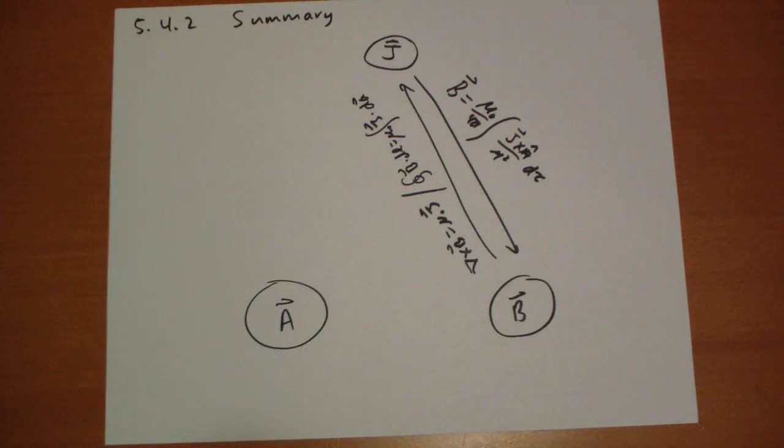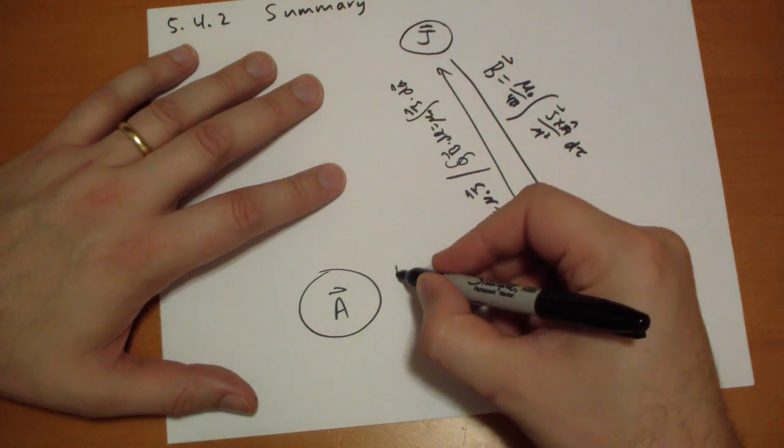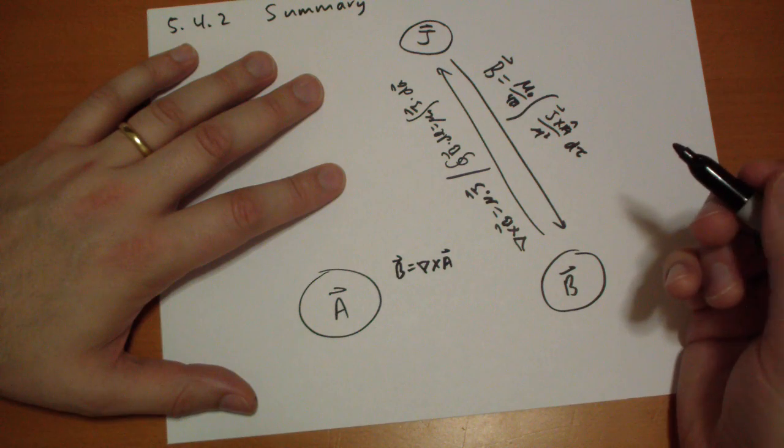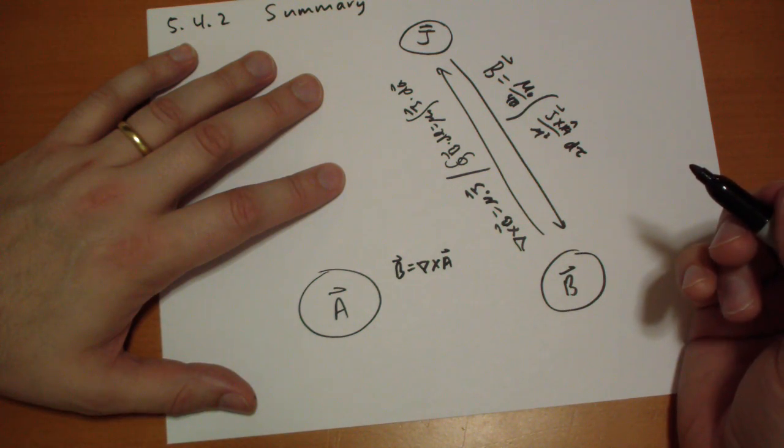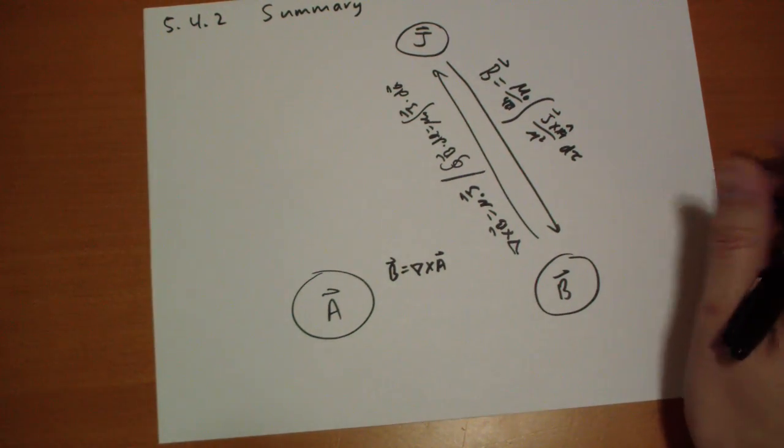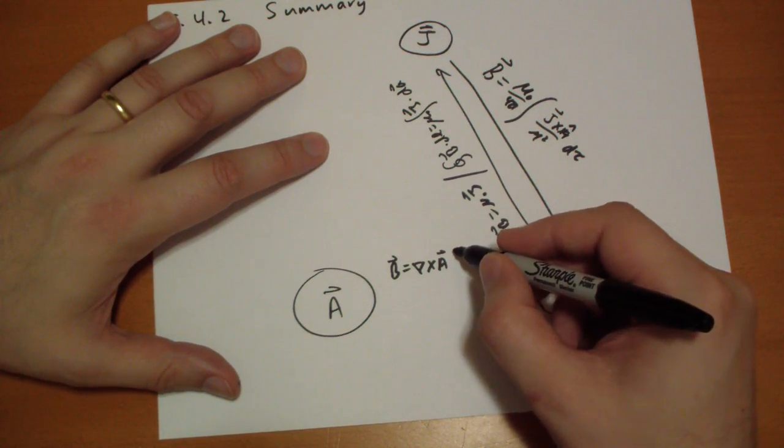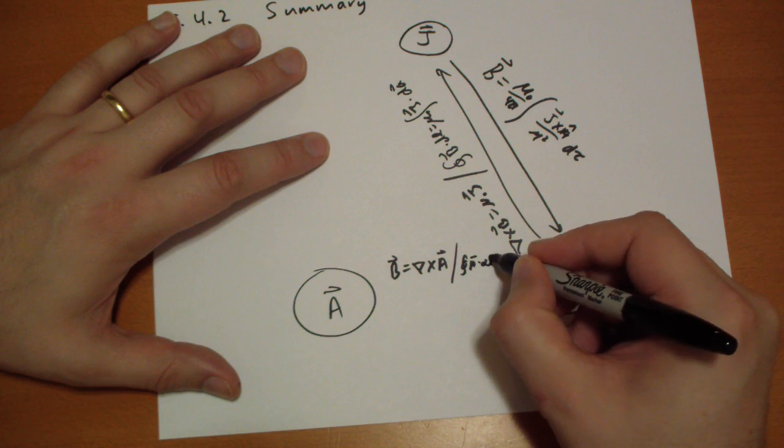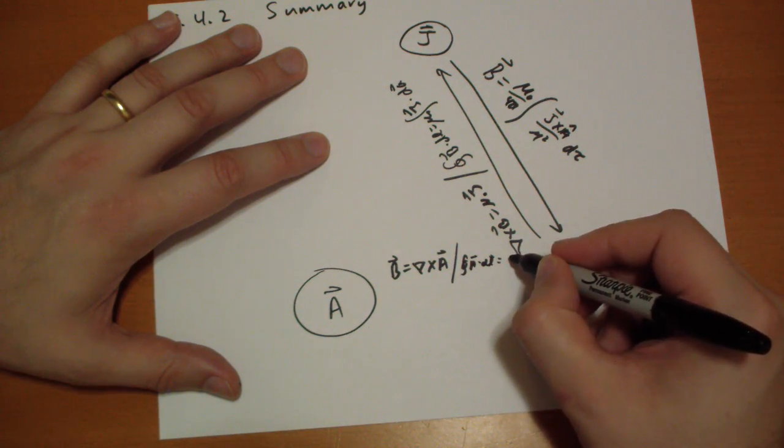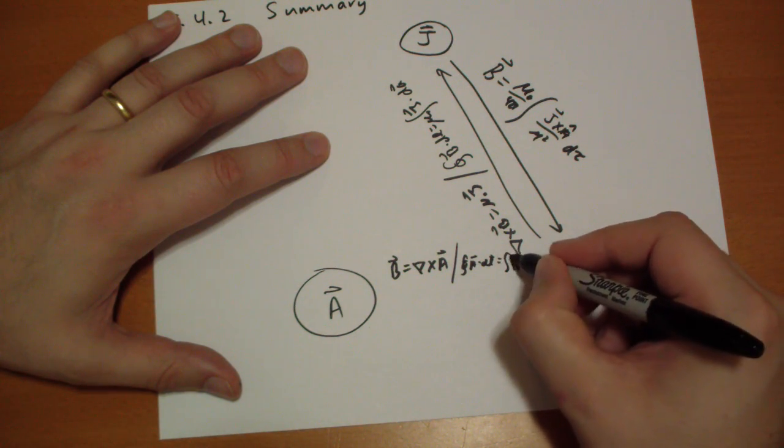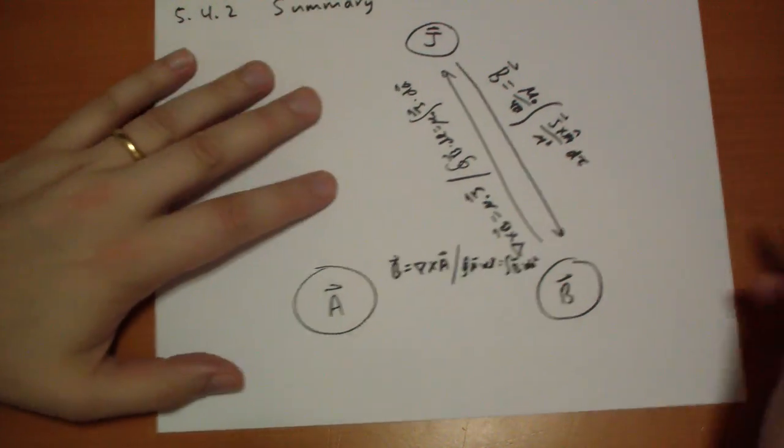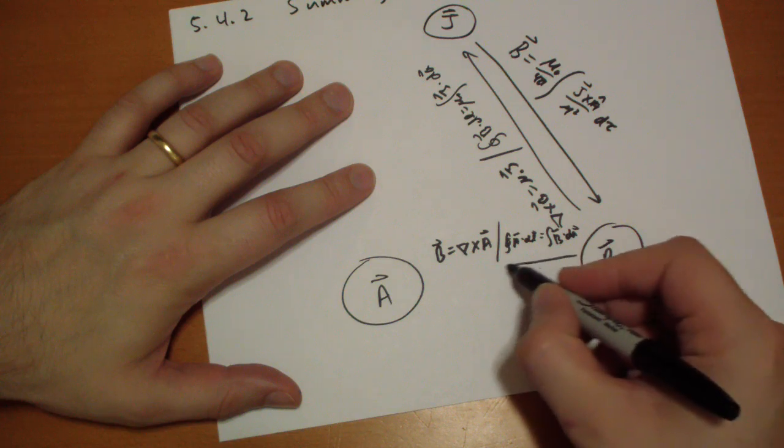That's how you go back there, okay? That's how we go between J and B. And then how do you go between B and A? Well, the B vector is the curl of the A vector. And as we've seen in that problem that we just did, we have also that the closed loop integral of A dot dL is equal to the magnetic flux.